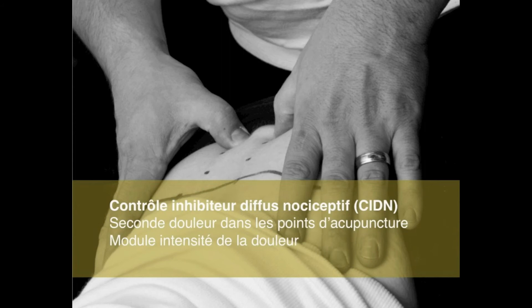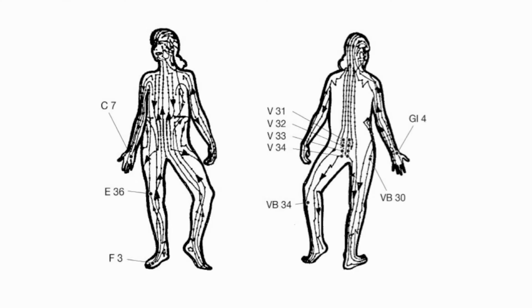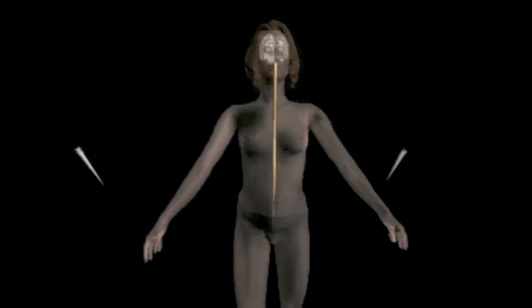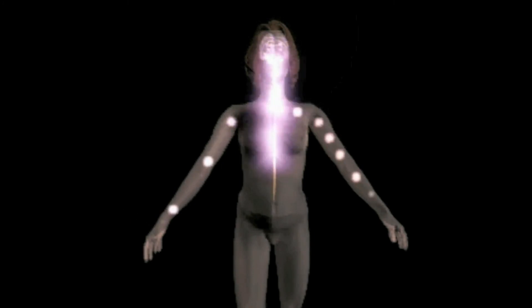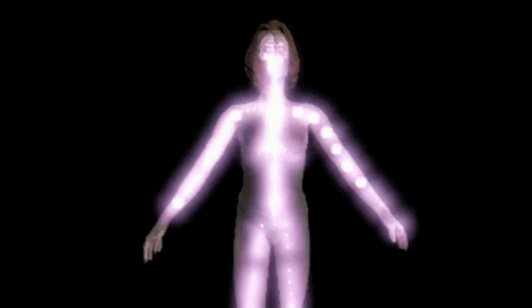Le dernier mécanisme, c'est le contrôle inhibiteur diffus nociceptif, qui consiste à créer une seconde douleur n'importe où sur le corps — ça peut être dans le bas du dos, dans la main, dans le pied. Quand on active ce mécanisme, le second signal nociceptif va envoyer un message au cerveau. Le cerveau va vouloir se concentrer sur cette nouvelle sensation et va relâcher une quantité importante d'endorphines partout dans le corps.